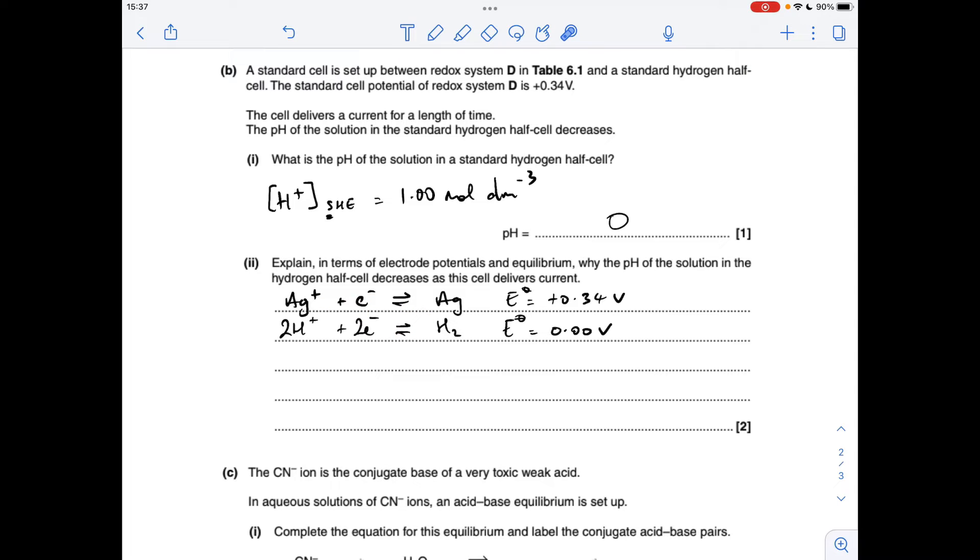So for the next part, I've written up the two half equations for the half cells. So system D is the silver plus silver, and we know that its electrode potential is plus 0.34 volts. It's obviously up against the standard hydrogen electrode, which has that half equation, and it has an electrode potential of 0 volts.